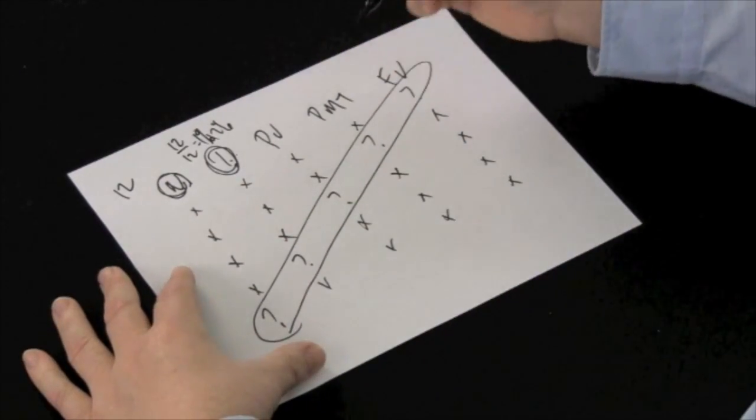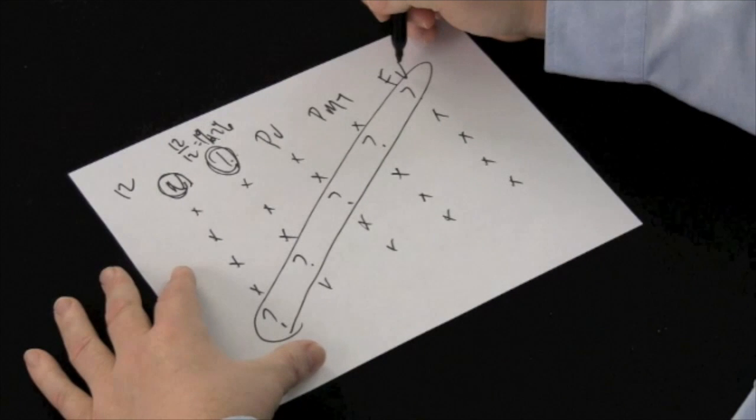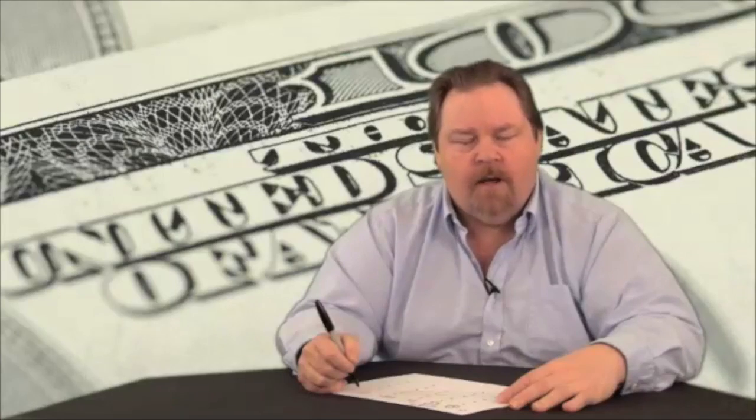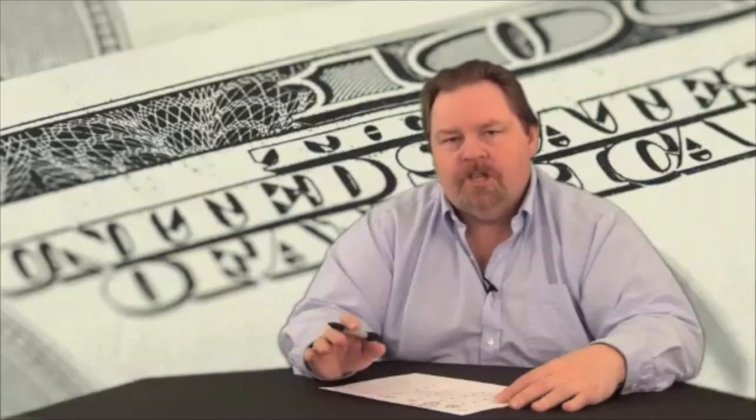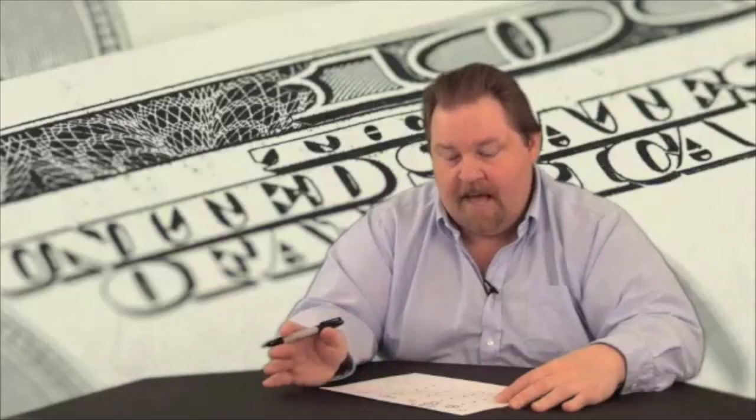The second thing is that present value and future value in your calculator will show a negative sign on one of them. And the negative sign doesn't mean you're losing money as in a negative value. It simply shows the direction of cash flow.